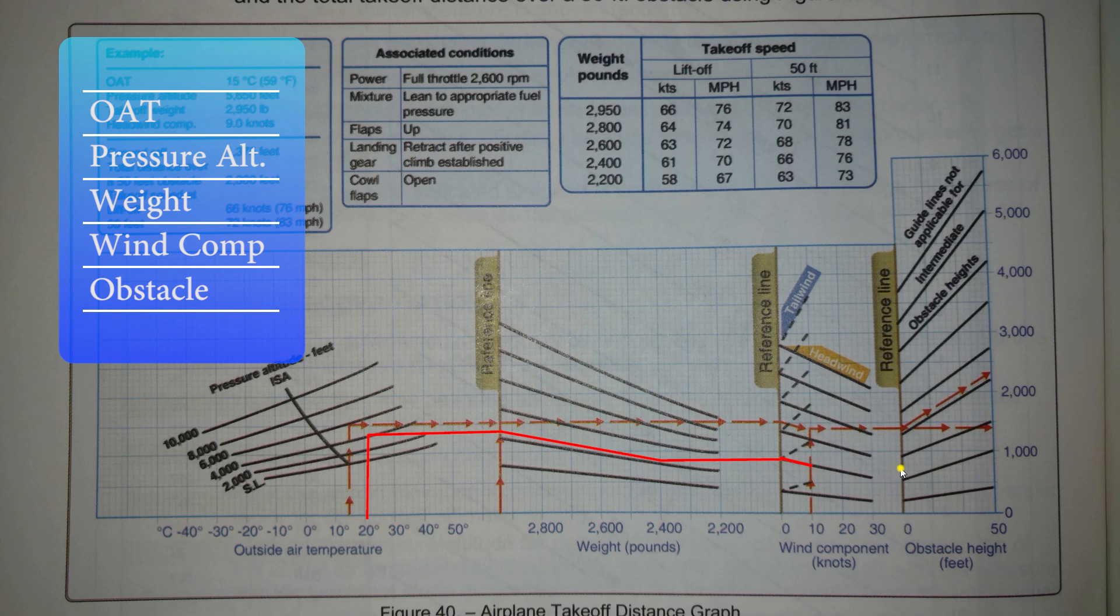And then what kind of obstacle do we have? Well, today we have a 25-foot obstacle, so we're going to follow these lines to 25 feet, then move straight across, and read we need 1,000 feet to take off and clear our obstacle.